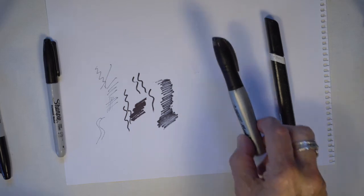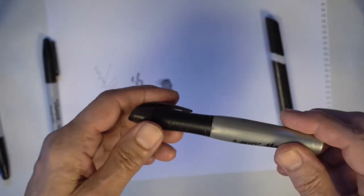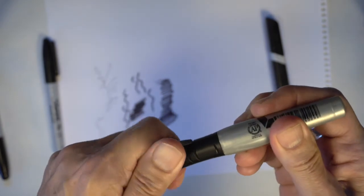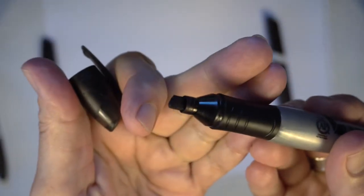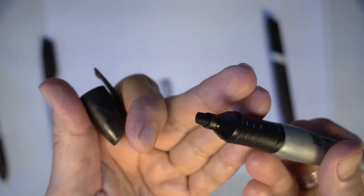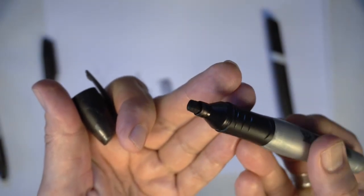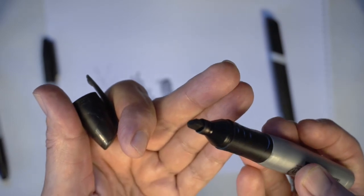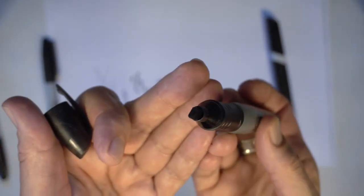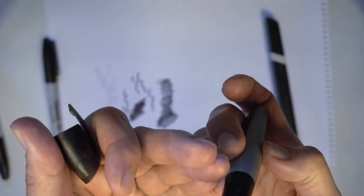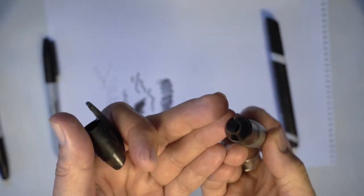Another marker style that I'm going to show you has a chisel point. So when I open this one up, you can see it has a very angular cut to it. And it's also quite wide. It's hard to see from the end, but from the end, it's about two millimeters wide.